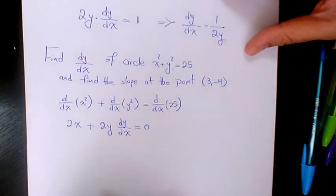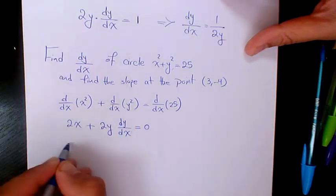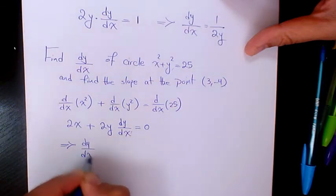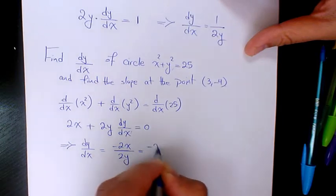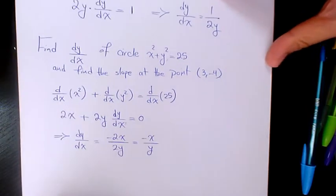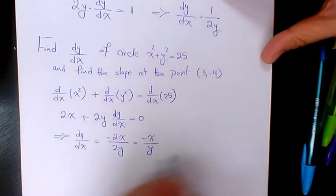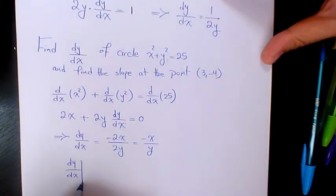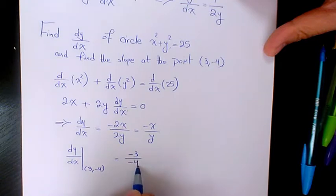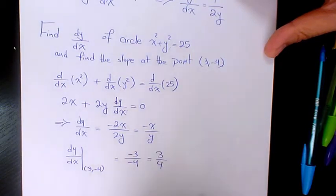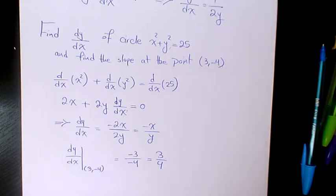Rearranging and isolating dy/dx, we get dy/dx = -2x over 2y = -x over y. To find the slope at (3, -4), we substitute to get -3 over -4, which equals 3/4. So the slope of this function at the point (3, -4) is 3/4.